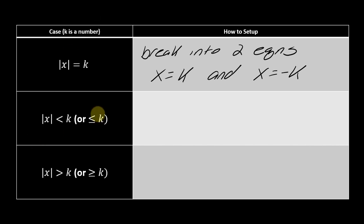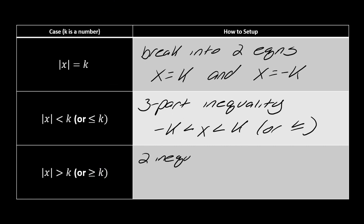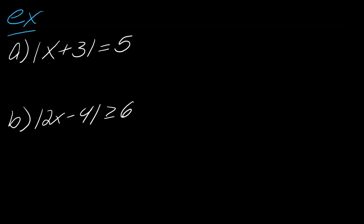This is very important: x has to be on the left side for this to work. If you have less than k or less than or equal to k, you form a three-part inequality: negative k is less than x which is less than k. And if you have greater than k or greater than or equal to k, you set up two separate inequalities: x is greater than k or x is less than negative k. It's very important to identify the case and set up the problem properly.